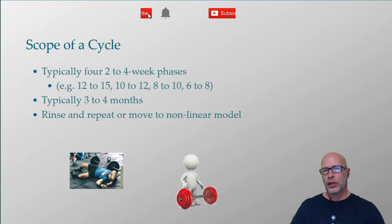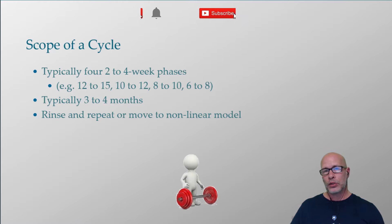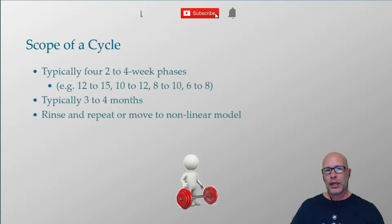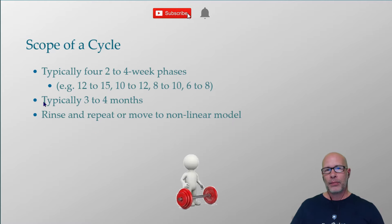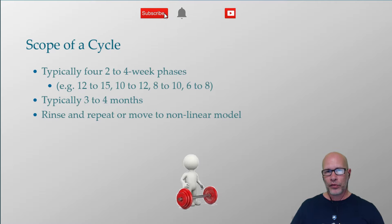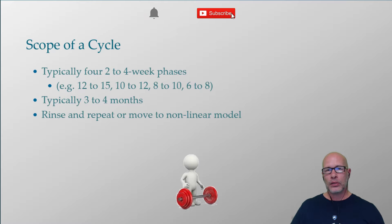In a perfect world, you'd then take about a week off to allow the body to recover from the cycle just completed. You could still do aerobic training, or even light strength training as a detraining and recuperation week. Then you cycle through it again, and the next time around they're stronger at 12 to 15 reps than they were the first time — and stronger in each phase. Then you rinse and repeat, or move to what's called a nonlinear model.